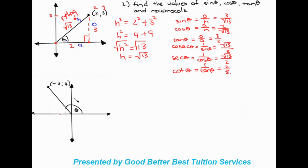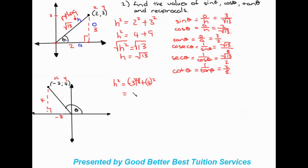Moving on to the next example. We're given a Cartesian plane again, the angle theta, and a line going to the point minus three and four. We identify the side lengths: the x value gives us three units at the bottom, but we keep the value minus three for substitution. The y value is four units in length. We use Pythagoras: h squared equals minus three squared plus four squared, which is nine plus sixteen. h squared equals twenty-five, so h equals five. We write that in.